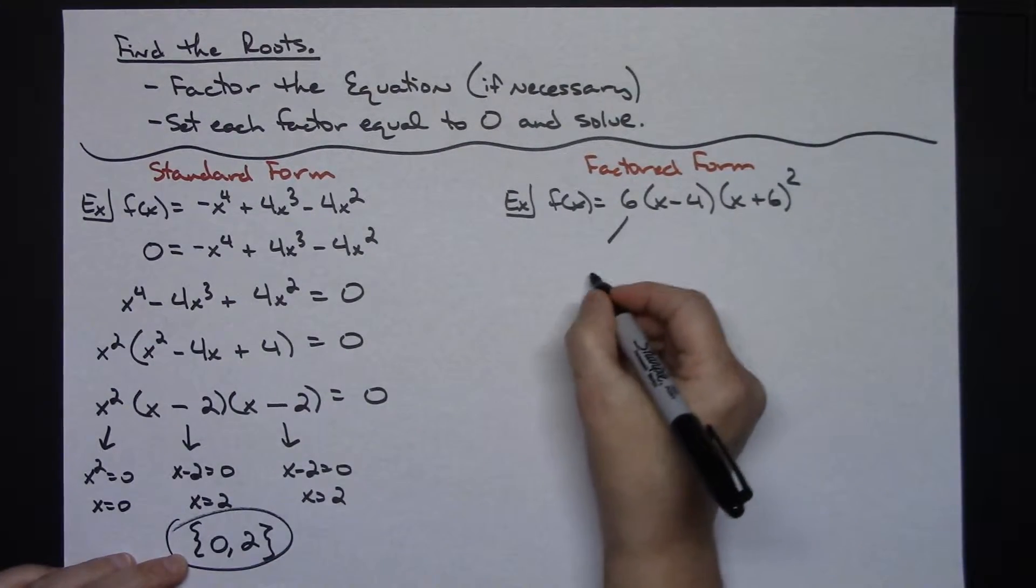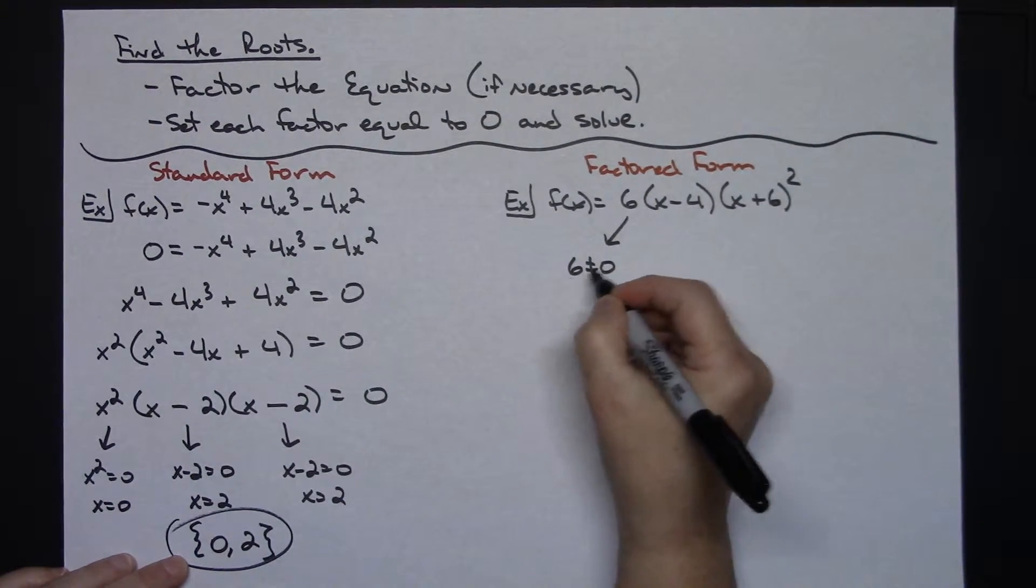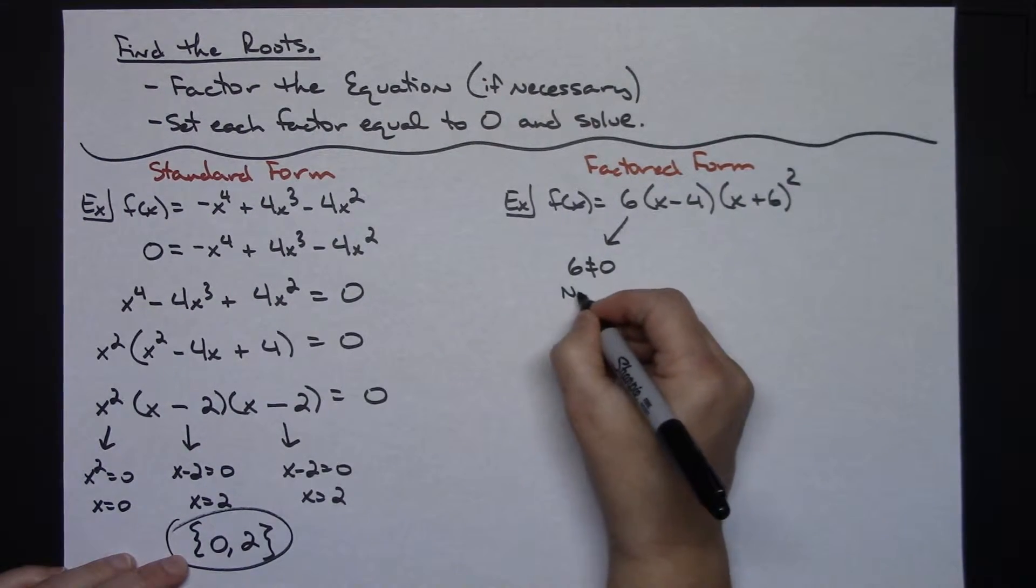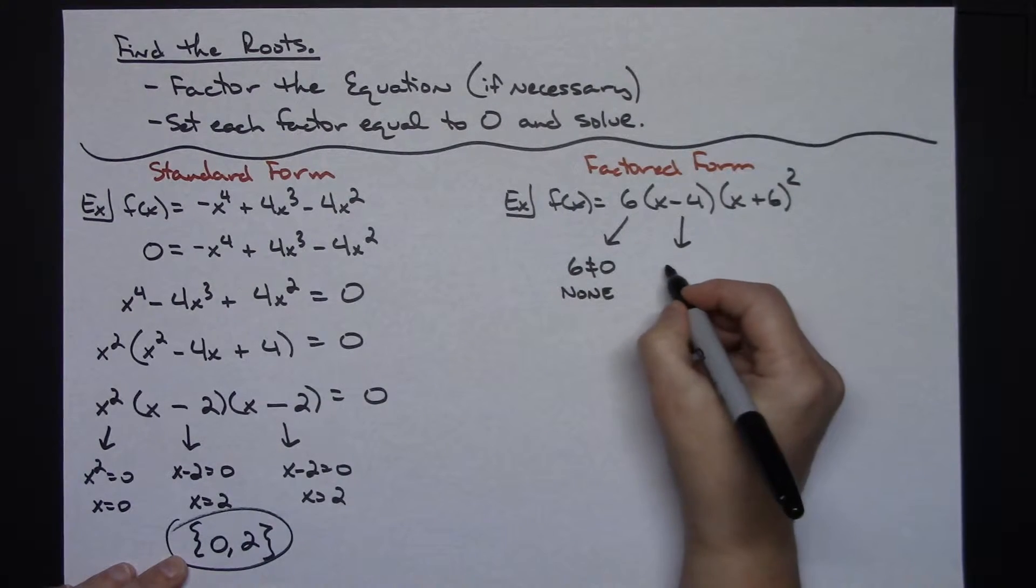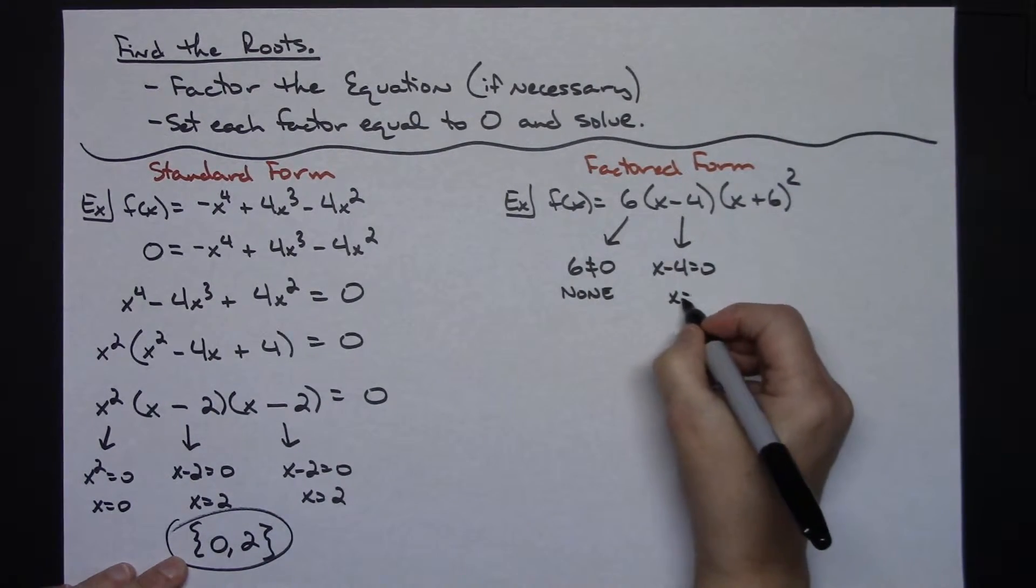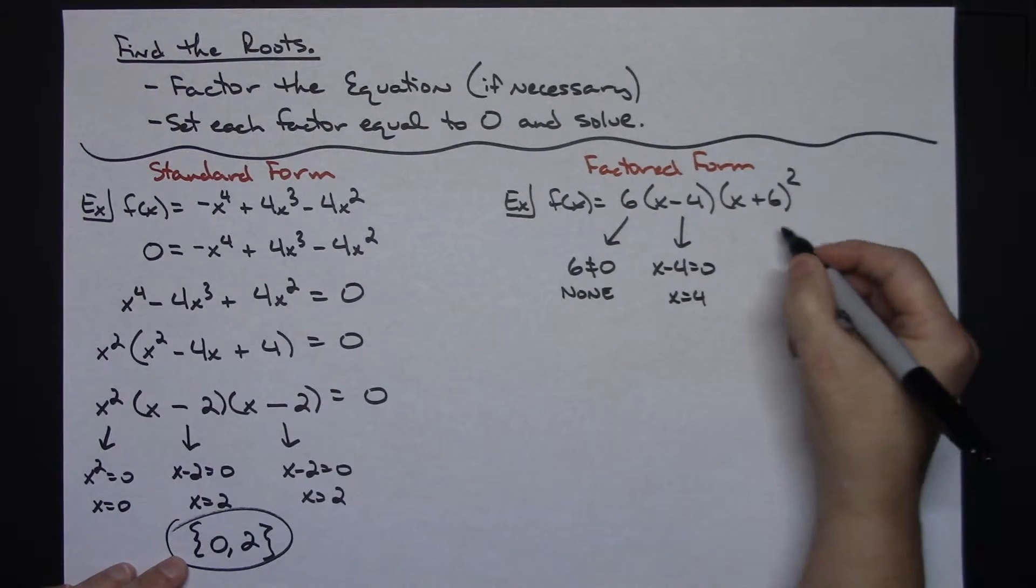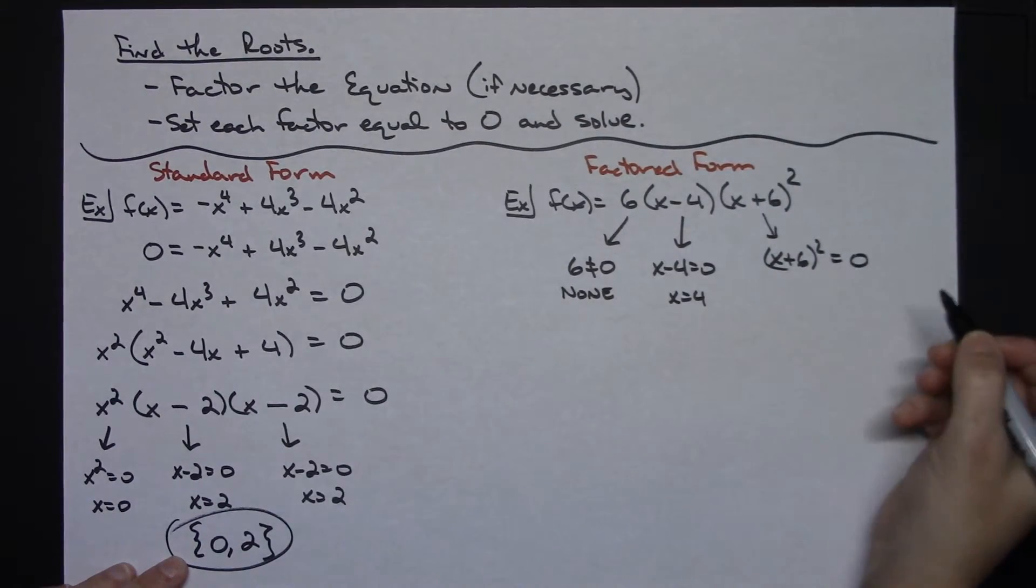Now when I set the 6 equal to 0, well 6 doesn't equal 0 so this doesn't give me any roots. I get none from this single number out in front. Now if I take this factor x minus 4, set it equal to 0, add 4 to both sides, x equals 4.